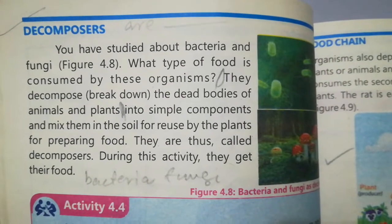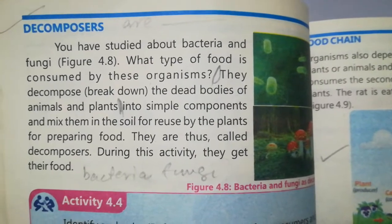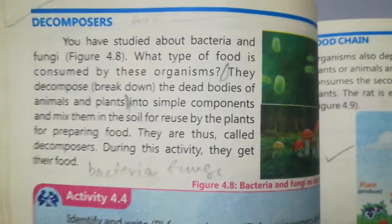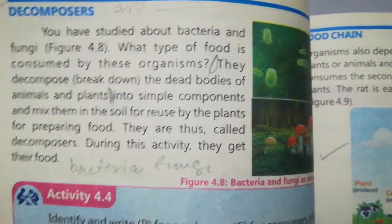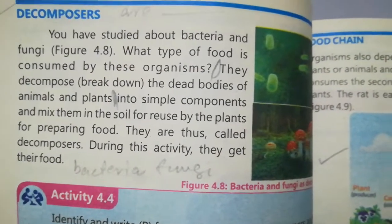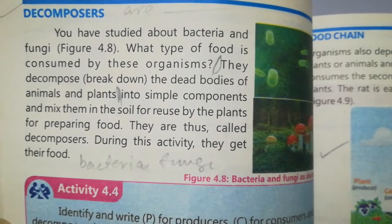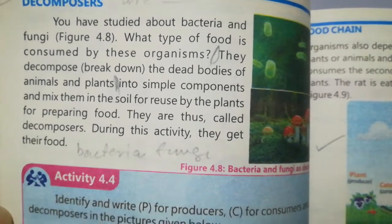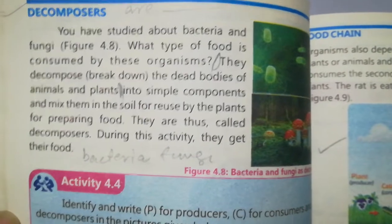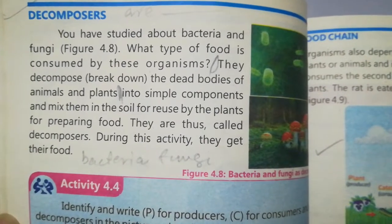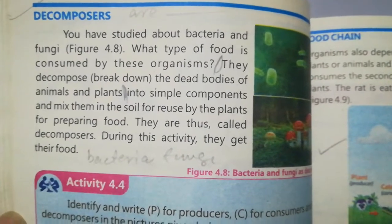Decomposers — you have studied about bacteria and fungi. What type of food is consumed by these organisms? What is the food of bacteria and fungi? The answer is, they decompose and break down the dead bodies of animals and plants into simpler components and mix them in the soil for reuse by the plants, for preparing food. They are thus called decomposers.